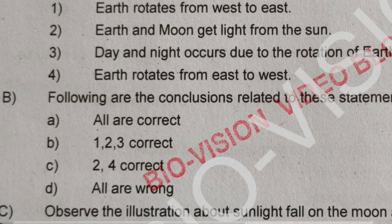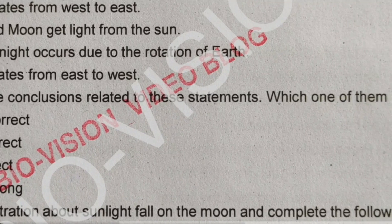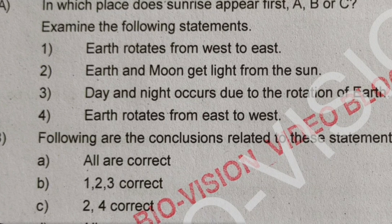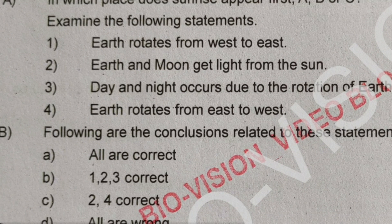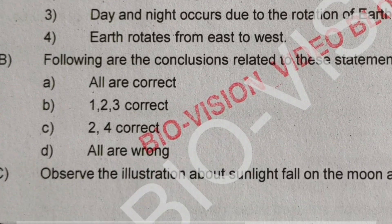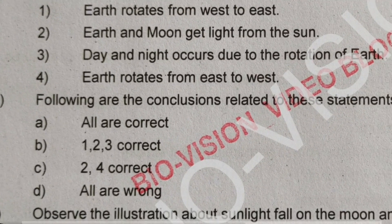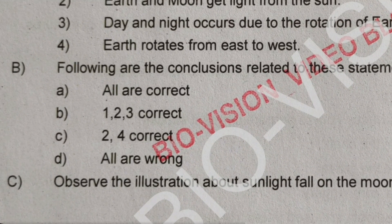Following are conclusions related to these statements. Which one is correct? The fourth statement — Earth rotates from east to west — is wrong. Statements one, two, and three are correct. So the answer is B: statements 1, 2, and 3 are correct.